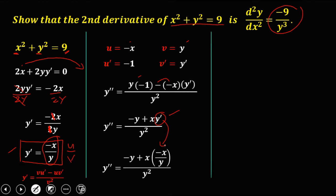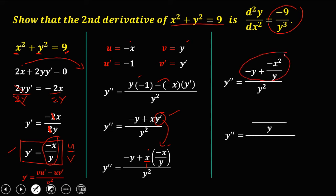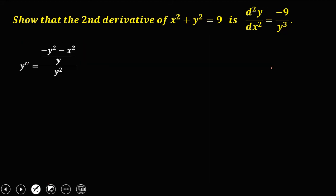Simplifying: x times negative x gives negative x squared over y. The LCD is y, so negative y over 1 becomes negative y squared, giving negative y squared minus x squared over y, all over y squared.